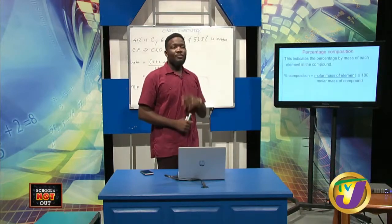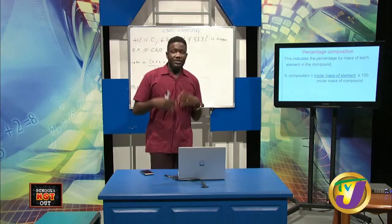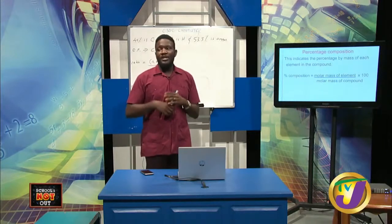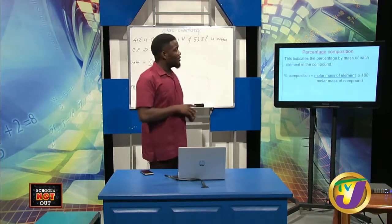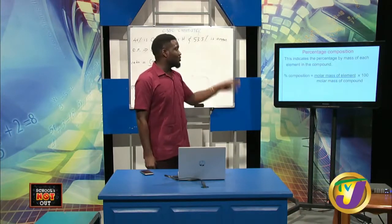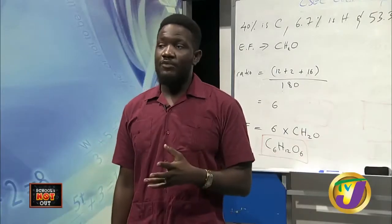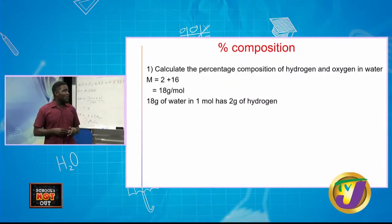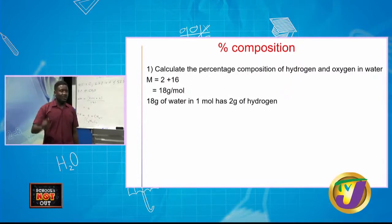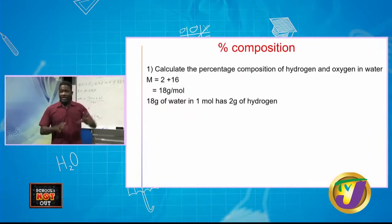Now let's move on to percentage composition. This indicates the percentage by mass of each element in the compound — for example, how much of water's mass is attributed to oxygen. The formula is: percentage composition = (molar mass of the element ÷ molar mass of the compound) × 100. Here's a question: calculate the percentage composition of hydrogen and oxygen in water.